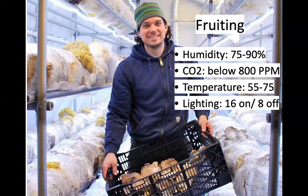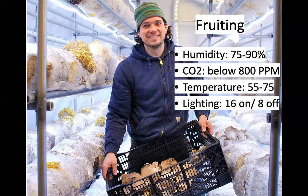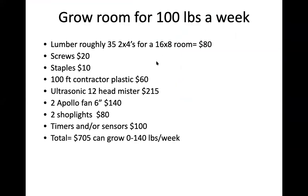Here's one example of what a fruiting room can look like — metal PVC pipe shelving with LED lights running at the top of each shelf, and 10-pound blocks. This is Brad from Wild Wood Mushrooms, a farm in Sutton. Unfortunately he had a fire in his farm and is just now getting back to rebuilding. I'll go through a couple other examples of what a fruiting room could look like.